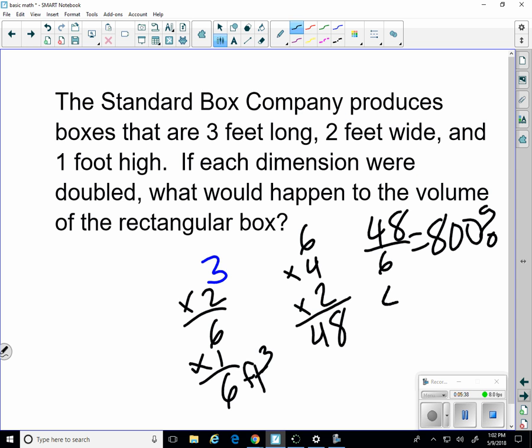If we say the length times the width times the height, then we just multiply by 2, each of those doubled, then I still get LWH, but I also get 2 times 2 times 2, which is 8. So that equals 8 times LWH, length times width times height.